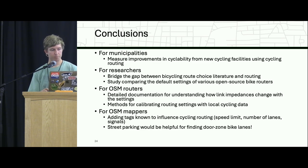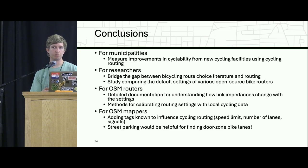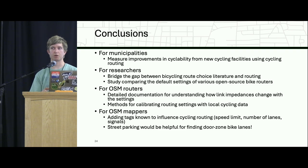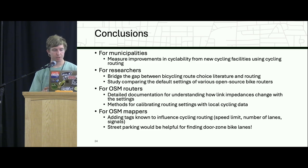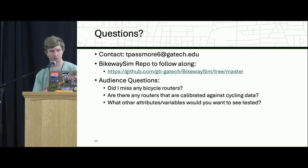For conclusions: for municipalities, using cycling routing as a means of evaluating improvements in cyclability for new cycling facilities is valuable. For researchers, there needs to be more gap-bridging between route choice literature and routing, and a study comparing the various available routers would be interesting. For OSM routers, keep up with documentation on how routing changes when you adjust settings, and offer methods for calibrating with local data. For mappers, adding tags we already know influence cycling routing — like speed limit, number of lanes, signals, and especially street parking to identify door-zone bike lanes — would be extremely helpful. Thank you.